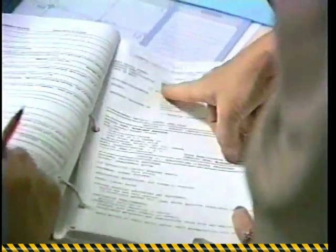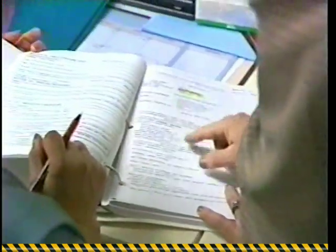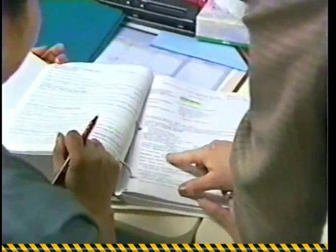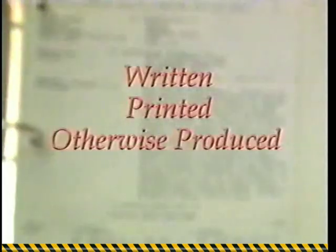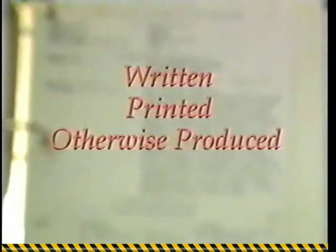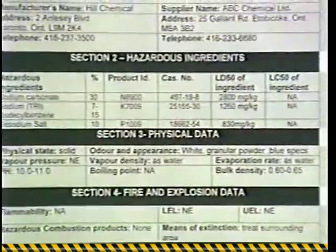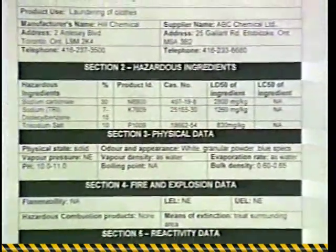The supplier must provide and your employer must obtain a Material Safety Data Sheet, or MSDS, for all controlled products purchased for use in the workplace. The Material Safety Data Sheet can be written, printed, or otherwise produced, but must contain these nine categories.